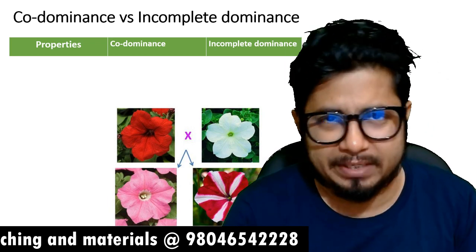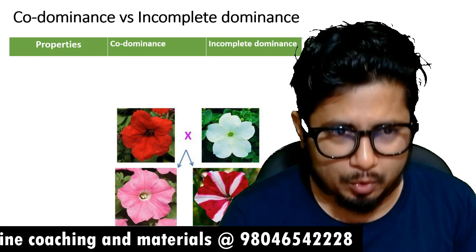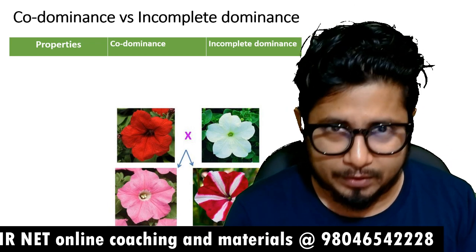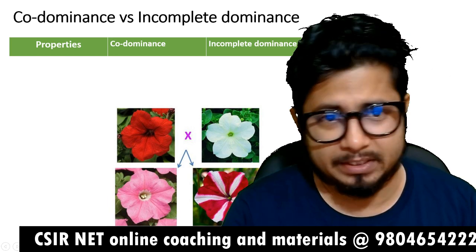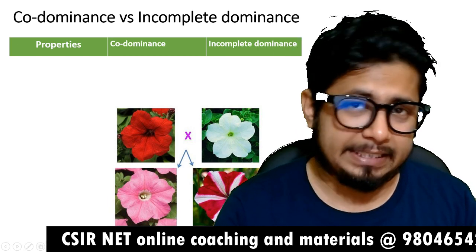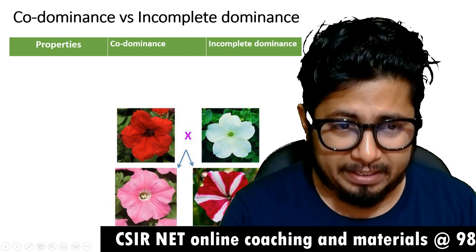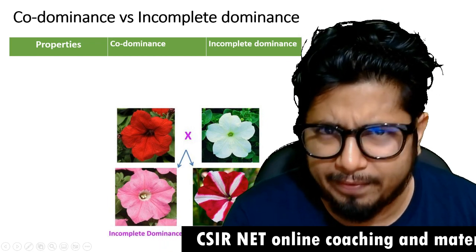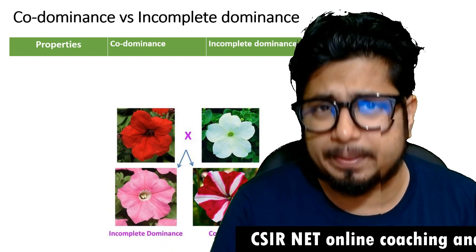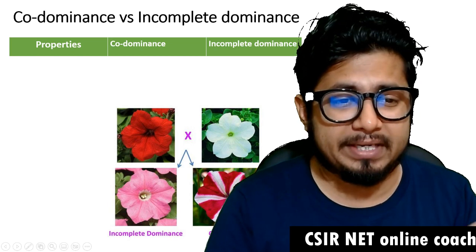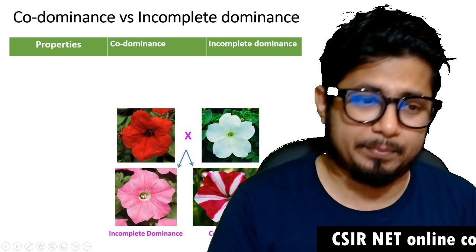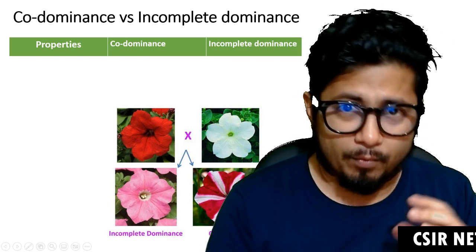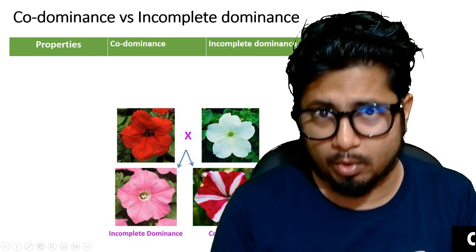In this picture, you can clearly see there's a difference shown in color where the parents are flowers. One is a red flower, another one is a white flower. If we cross them, we can get either a pink flower, or we are getting a flower with white and red altogether. When we get a pink flower, we're calling it incomplete dominance. When we get a white and red spotted flower, we call it co-dominance.